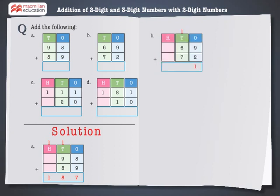Regroup 14 as 100 and 4 tens by inserting the 100's column. Finally, add the 100's: 1 plus 0 plus 0, which is equal to 1. Thus, 69 plus 72 is equal to 141.